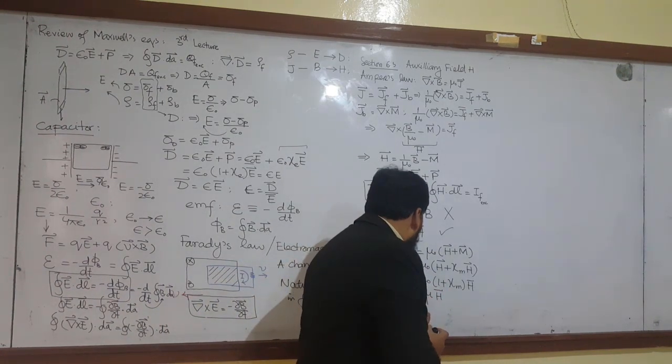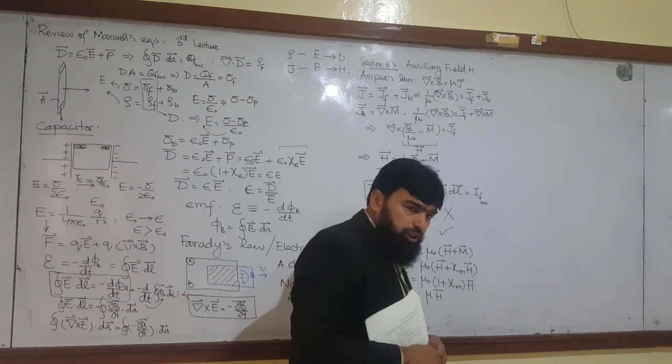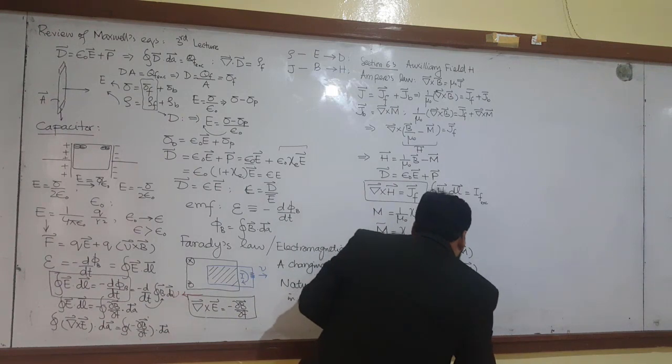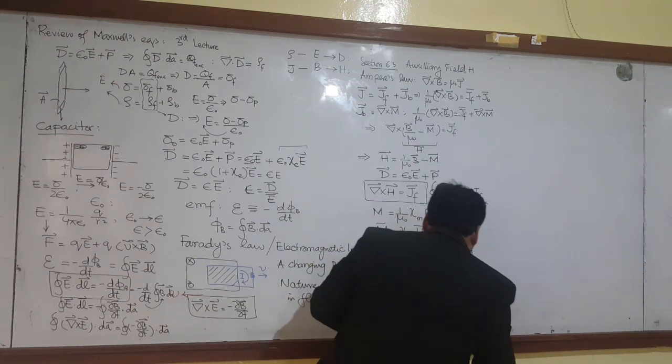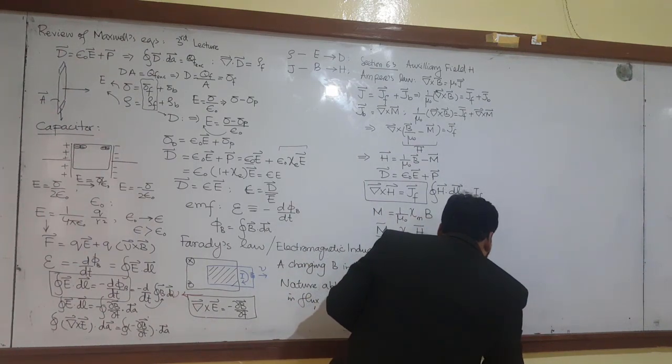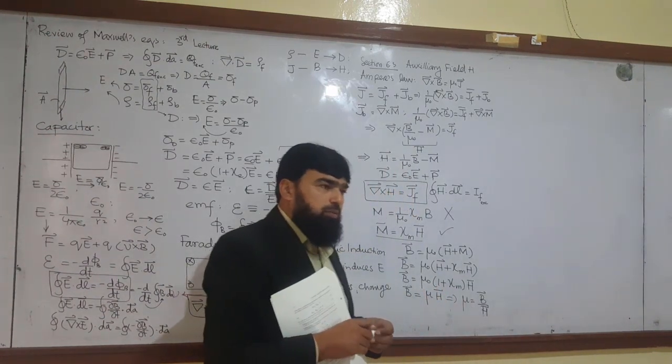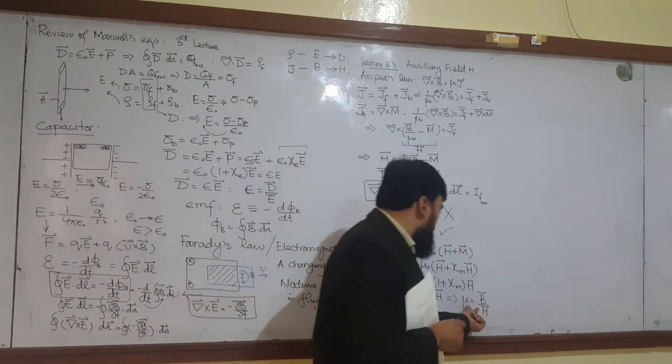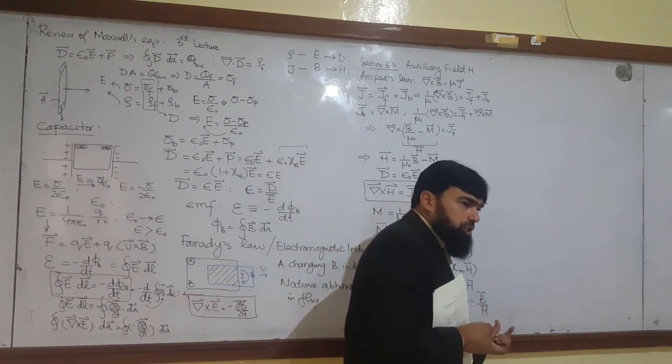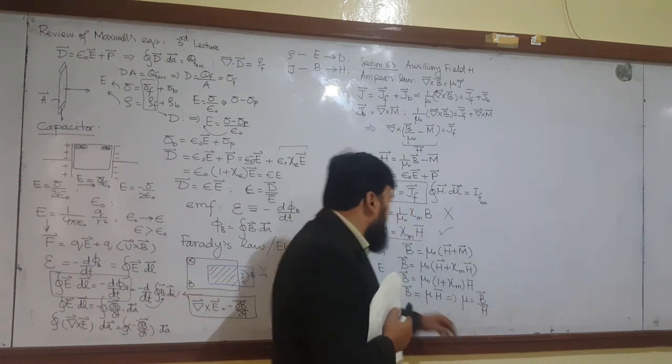But B is mu times H. And I came right from here that mu is actually equal to the ratio of B to H. The magnetic permeability of a material is mu equal to the ratio of B over H. Look here. This is not the dielectric constant. This is the magnetic permeability.